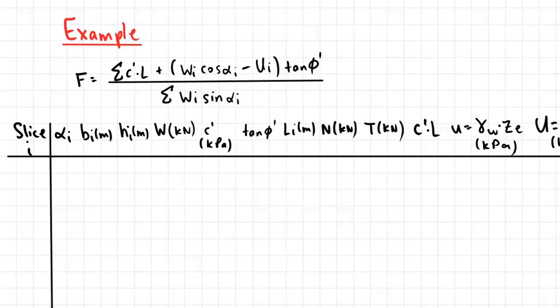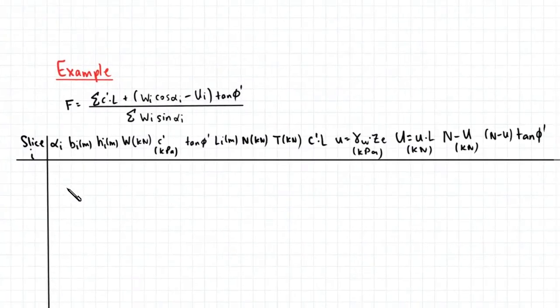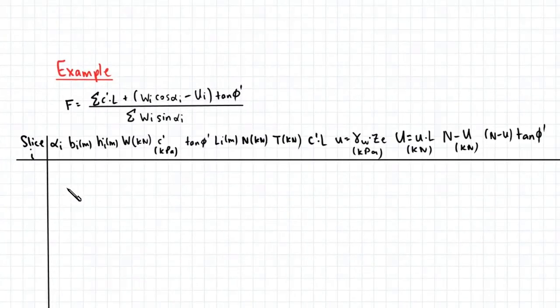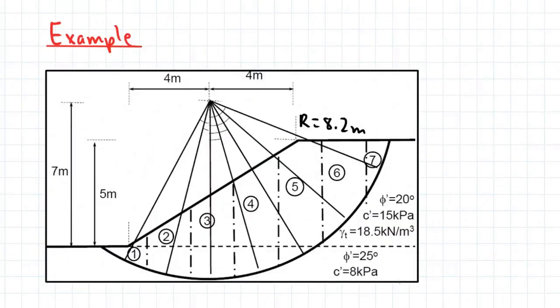So first we need to set up a table. So I'll just zoom this out a bit so you can see what the entire table looks like. So the first column is slice, which just denotes the number of which slice you're looking at. So we have seven slices. And alpha is the angle that each individual slice makes with the center of the circle. B corresponds to the thickness of a slice. H corresponds to the average height of the slice. So essentially, if you look at the middle of the slice, extend a vertical line upwards, and we take that dimension to be H.